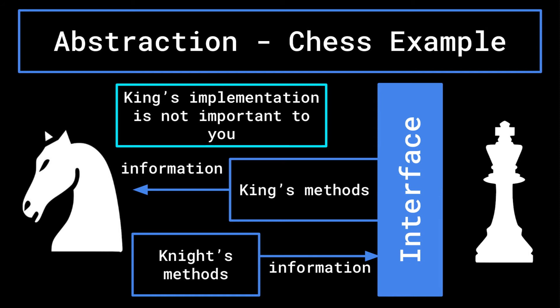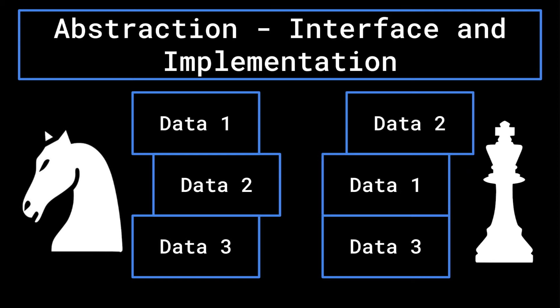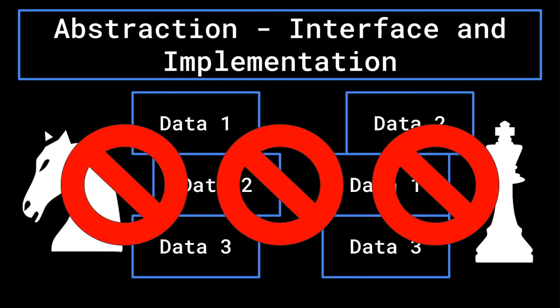This manner of only allowing classes to interact through a predetermined interface prevents different pieces of the program from becoming completely coupled together. If the knight class has to look into the king class in order to make a determination, then it is reliant on the king class being set up in a certain way in order to function. If the king class were to be changed, reorganized, or have any of its data renamed, then the knight class would no longer work, and it would also have to be changed.